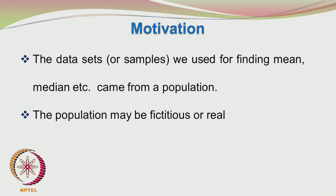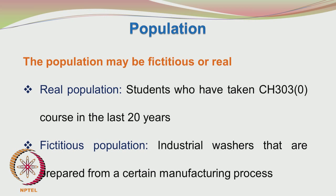The population may be fictitious or real. We can assume that the data or the sample being collected is coming from a certain population — it may be a fictitious one. Sometimes the population may also be real and we can directly relate to it. For example, the population may be the students community which have taken a course in chemical engineering over the last 30 or 35 years.